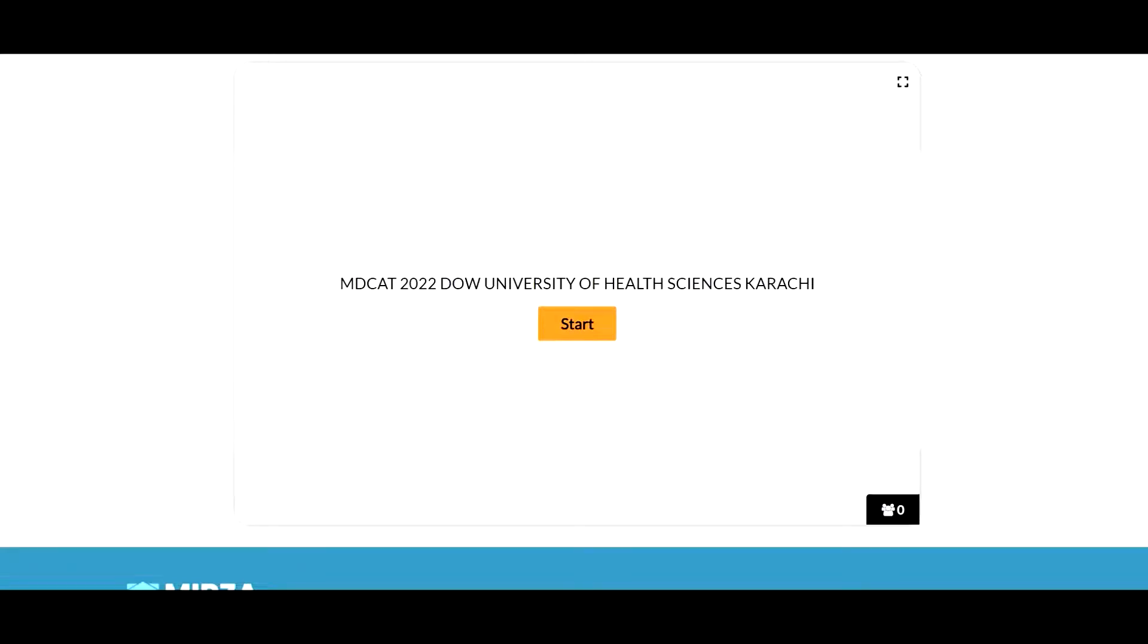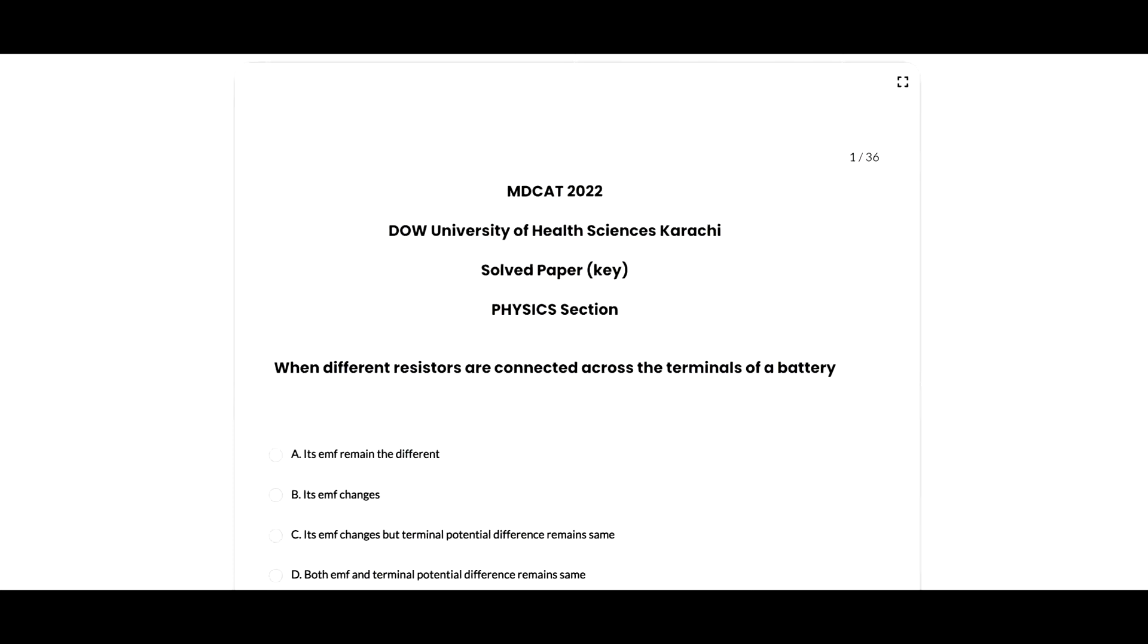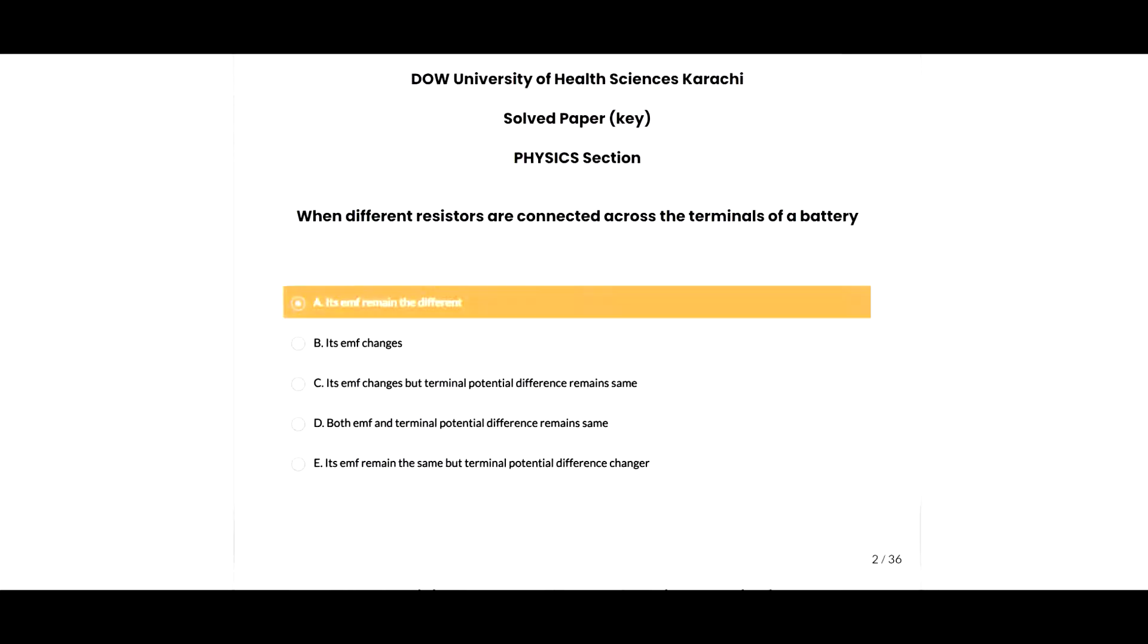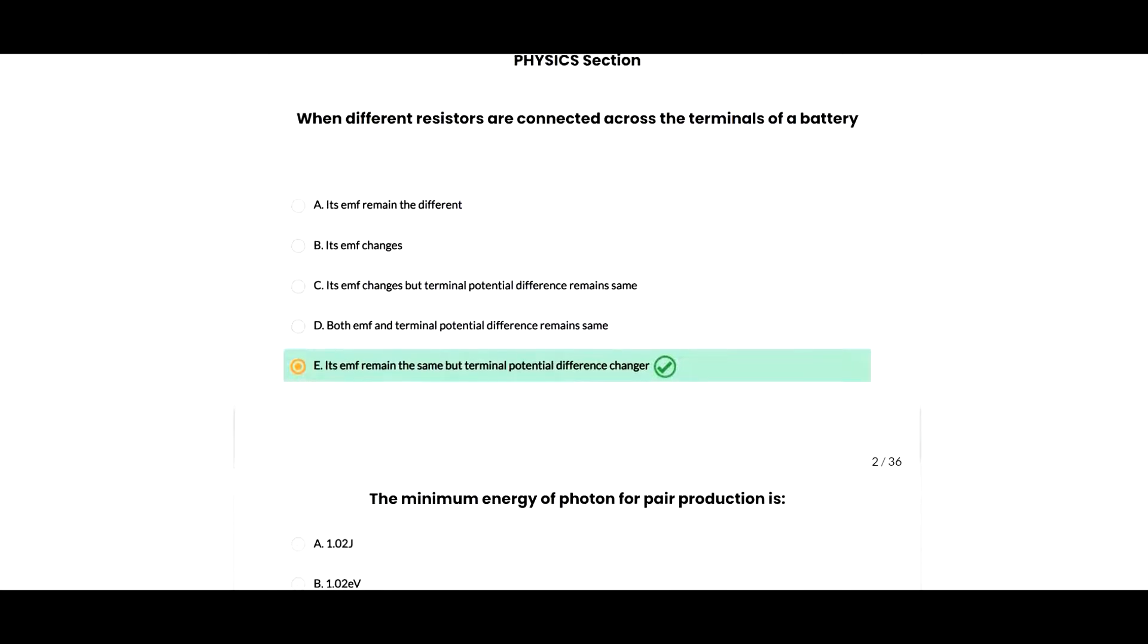Hey guys, today I am going to solve the paper of MDCAT 2022 DOW University of Health Sciences. Let's start. Here is the first question: when different resistors are connected across the terminals of a battery, its EMF remains the same but terminal potential difference is changed.